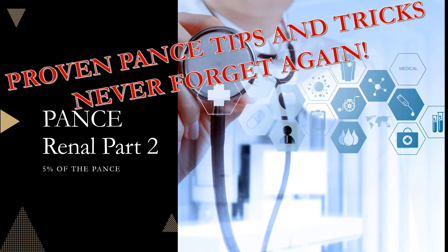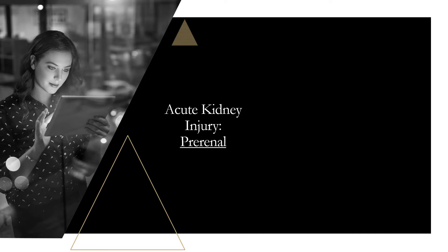This is a PANCE review for part two of the renal system. Starting with acute kidney injury — pre-renal. The main thing to know about pre-renal is that there's nothing wrong with the kidney. The kidney is fine, but you have decreased renal perfusion. The kidney is doing fine; the person is volume depleted.